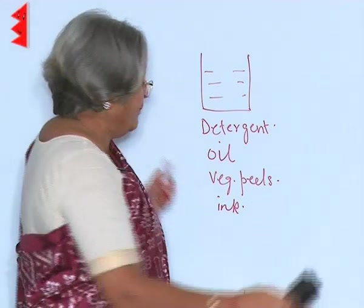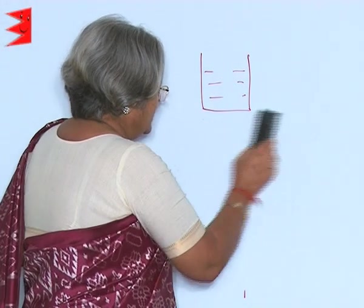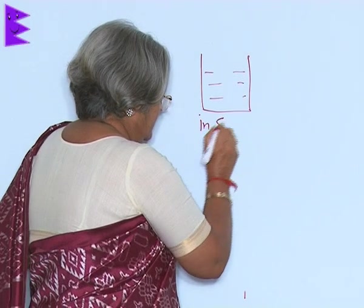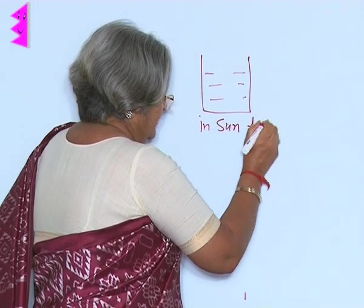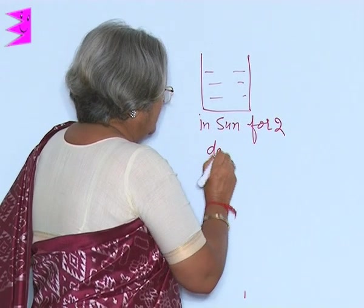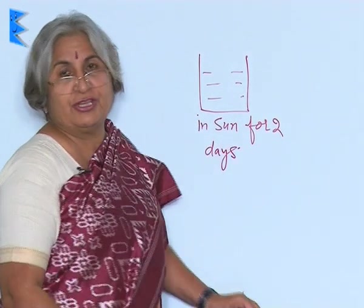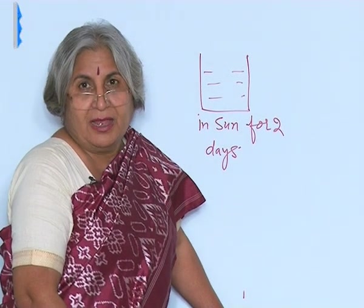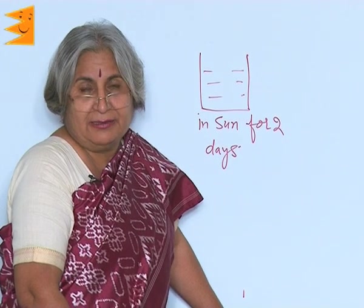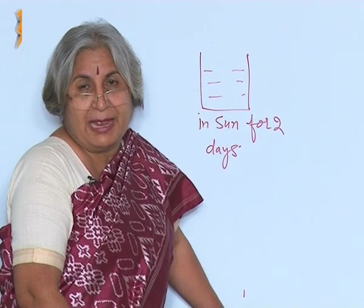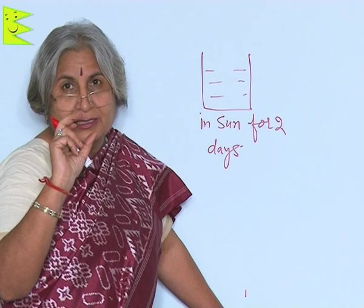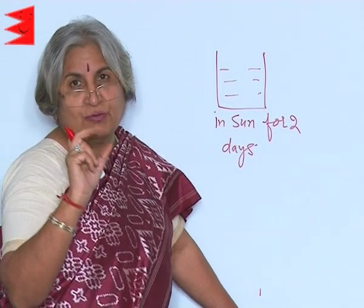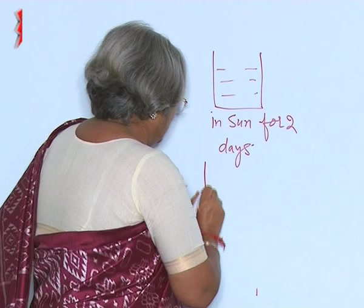Now you put this beaker in sun for two days. What will happen is there will be decomposition of this matter. After you have kept it in the sun and the decomposition has happened, take a sample out of this water or a part of this water and put it in a test tube.